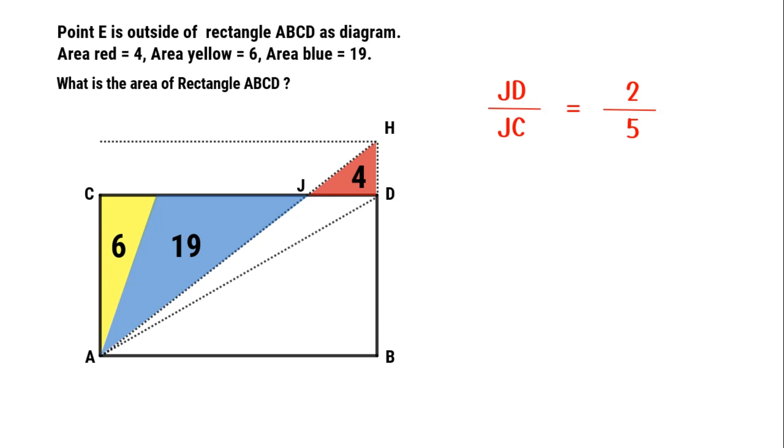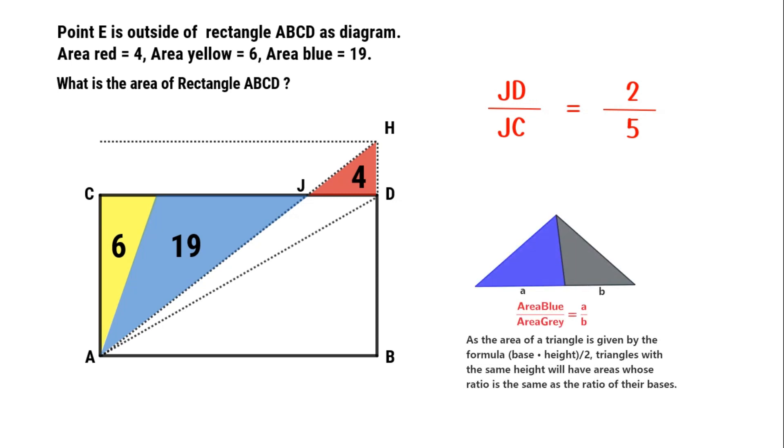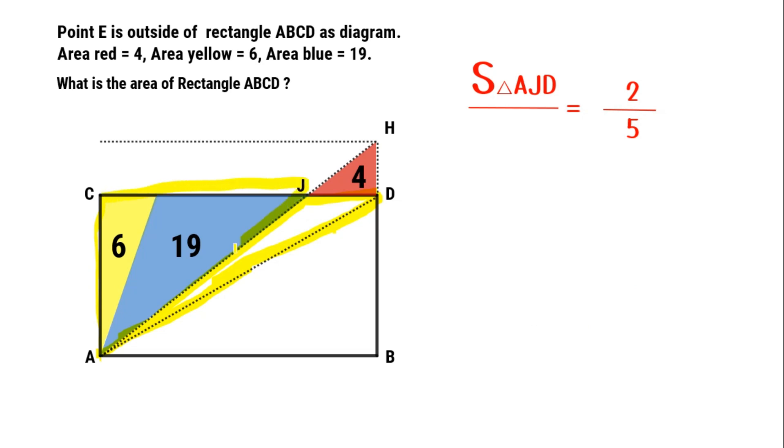Connect AD. Using the principle of same height for two triangles, we can get area triangle AJD over area triangle ACJ equals 2 over 5. Since area triangle AJD over 25 equals 2 over 5, we can calculate area triangle AJD equals 10.